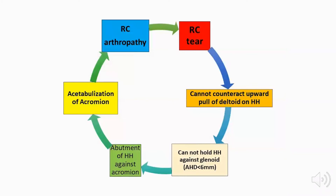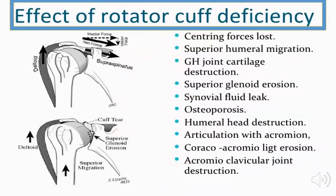The natural history of rotator cuff tears begins with the tear occurring, after which the rotator cuff cannot counteract the upward pull of the deltoid, leading to diminution of the acromiohumeral distance, abutment of the humeral head under the acromion, acetabularization of the acromion, and finally rotator cuff arthropathy. The effects of rotator cuff deficiency include: loss of centering forces, superior humeral head migration, destruction of articular cartilage, superior glenoid erosion, leakage of synovial fluid, osteoporosis, humeral head destruction, articulation with the undersurface of the acromion (acetabularization), coracoacromial ligament erosion, and destruction of the acromioclavicular joint.